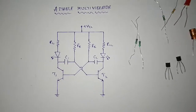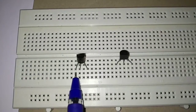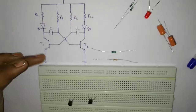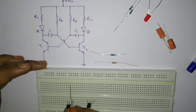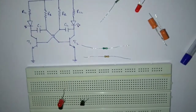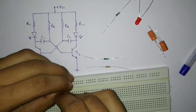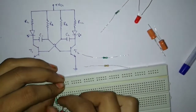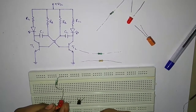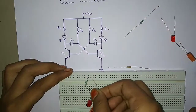To demonstrate the astable multivibrator, we have to make circuit connections as per the circuit diagram. These are the two transistors — connected such that these are the emitter, base, and collector of transistor T1, and the collector, base, and emitter of transistor T2. To the collector of T1, I am connecting an LED. To the anode end of the LED, I am connecting a 1kΩ resistor. To one end of the collector, I am connecting a 100uF capacitor. To the other end of the capacitor, I am connecting a base resistor of 10kΩ.